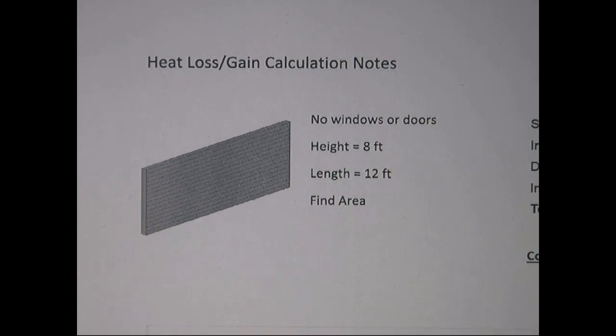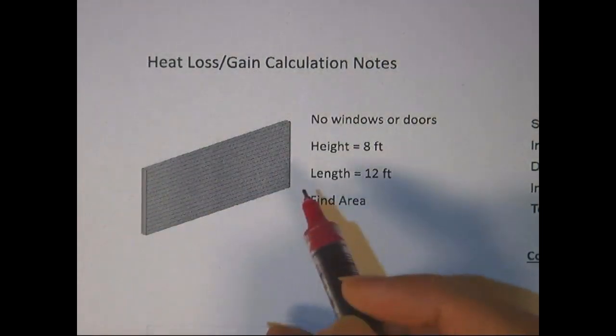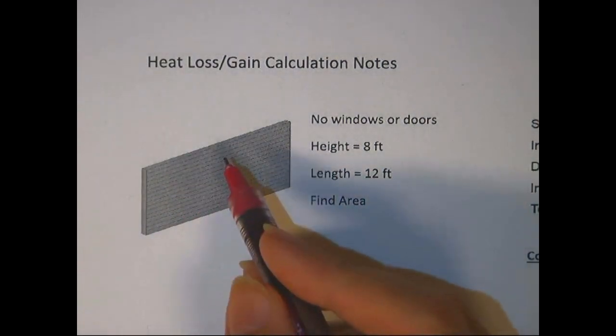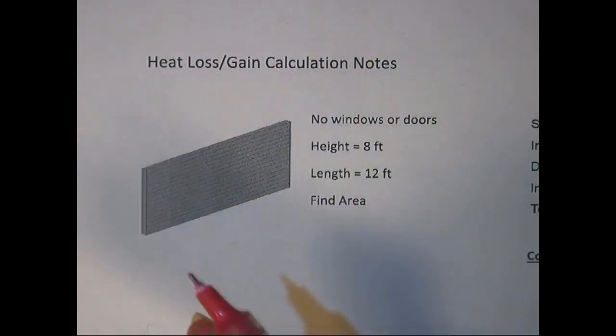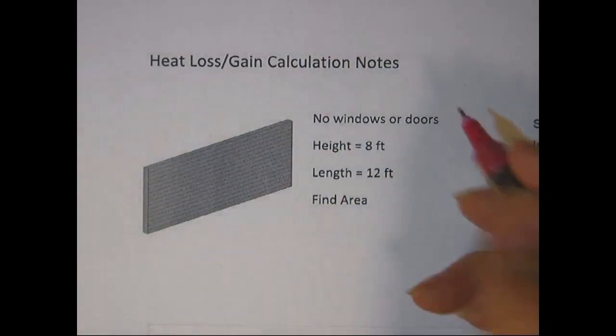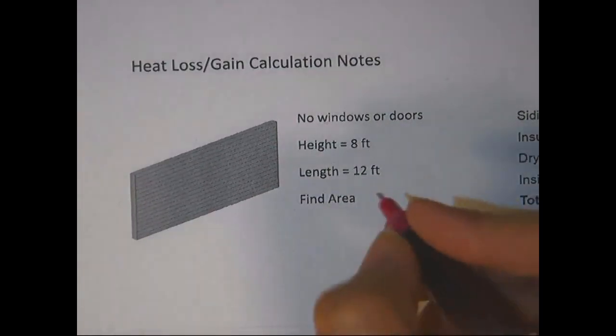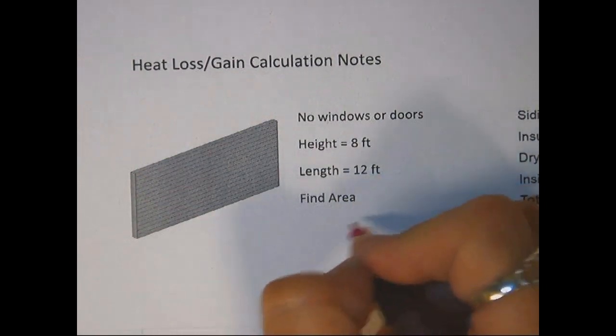So first of all, if we had a wall that had no doors or windows, we'd find the area. If we did have a window in here, we would just find the area and subtract out the window because the window is not part of the wall. So regular area of a regular wall, length times width, or length times height in this case.